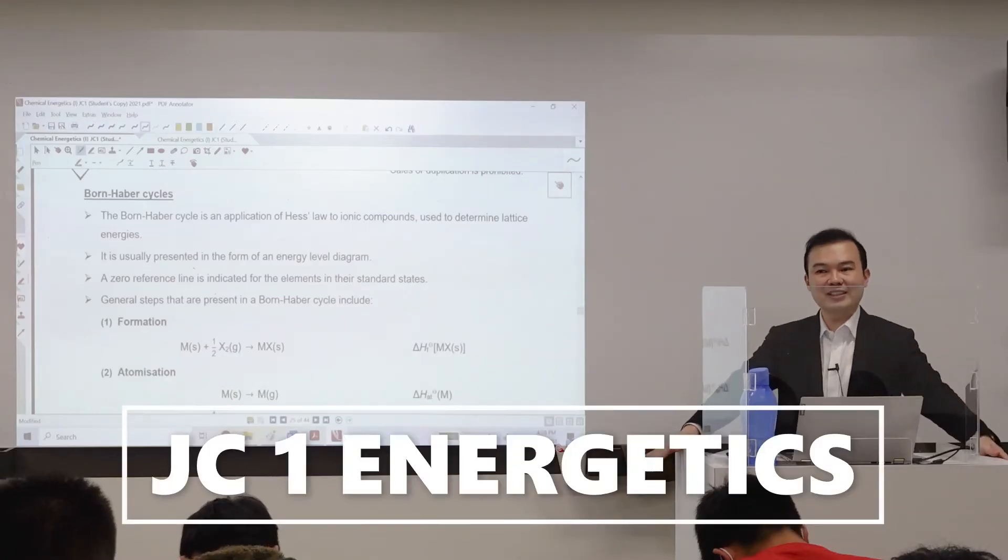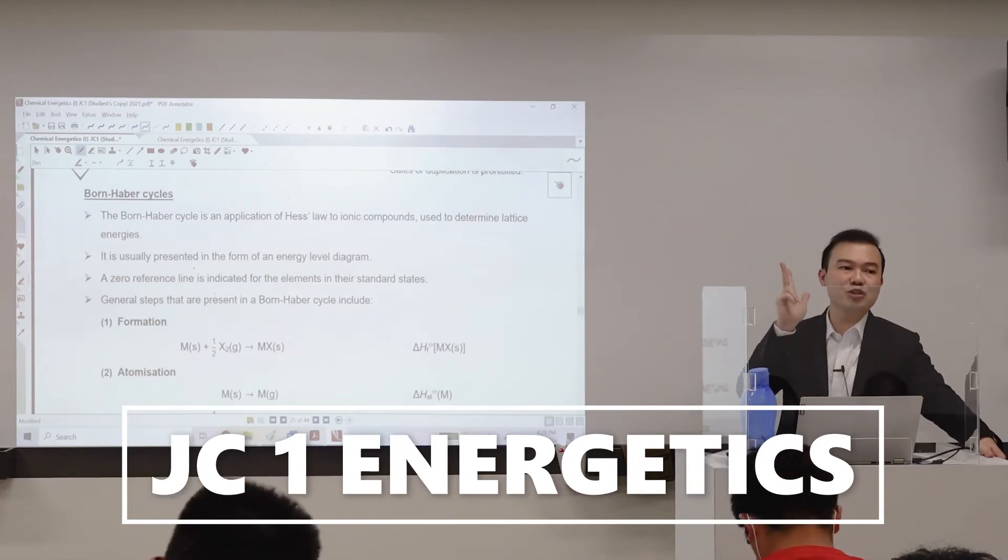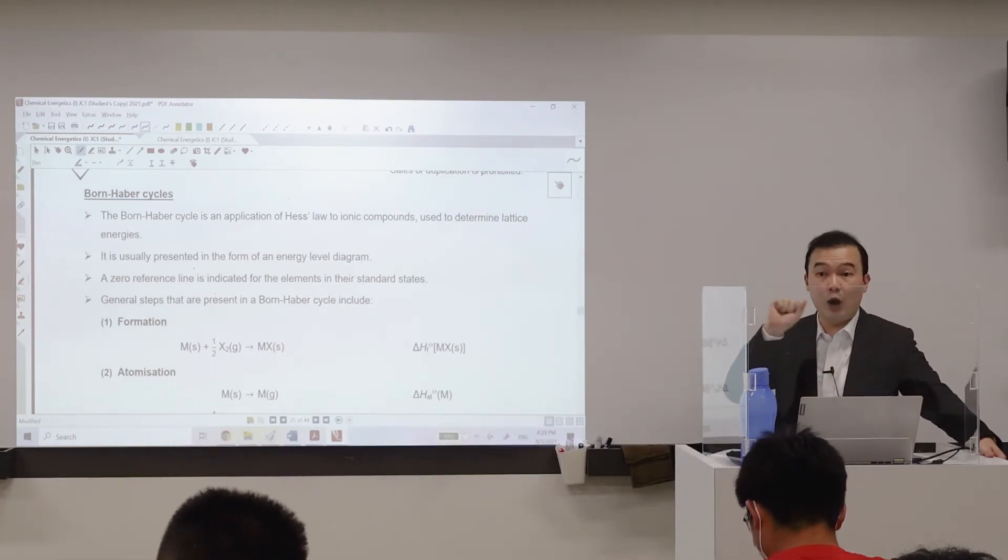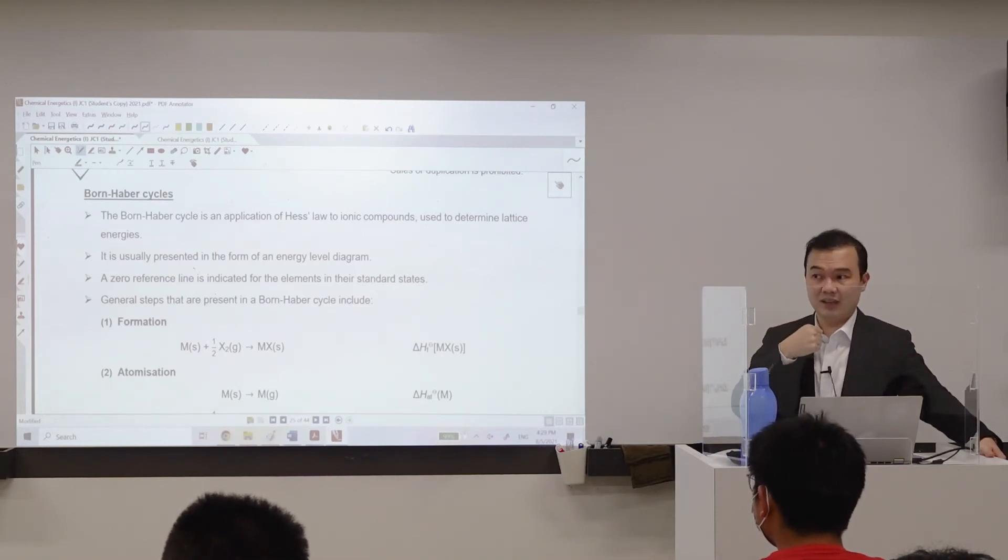Now, we've introduced three definitions already. You have atomization, you have ionization energy, you have electron affinity, of which IE and EA, they are opposite of each other. One is pull out electron, one is force in an electron.